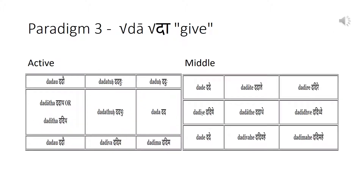Let us take the root 'dā' (give) as an example of a conjugation of a root ending in 'a'. The stem forms are 'dadā' and 'dad'. Note the ending 'au' in the first and third person singular of the active.